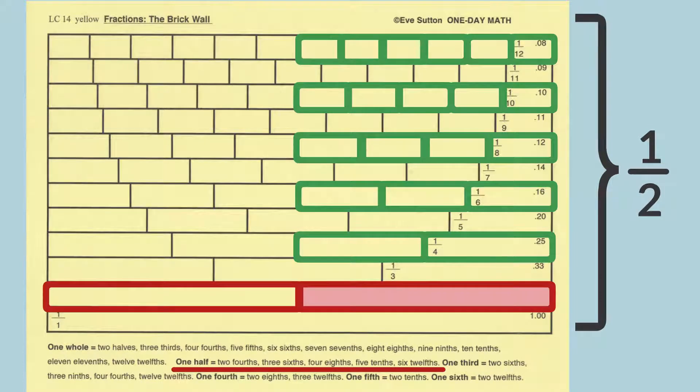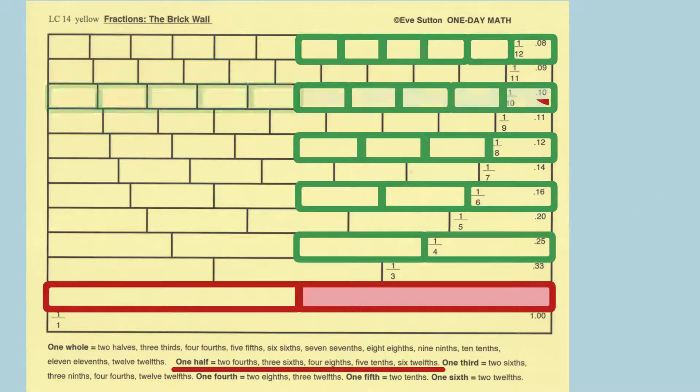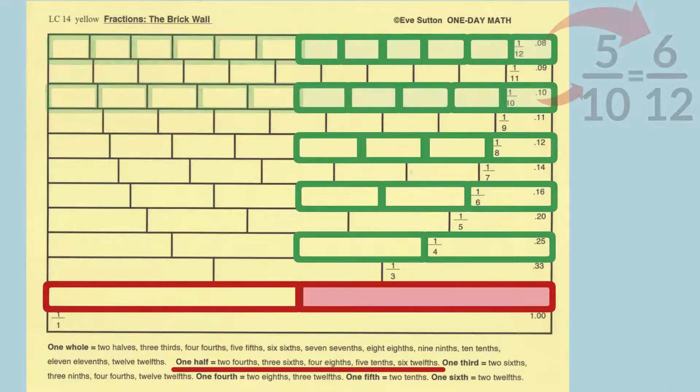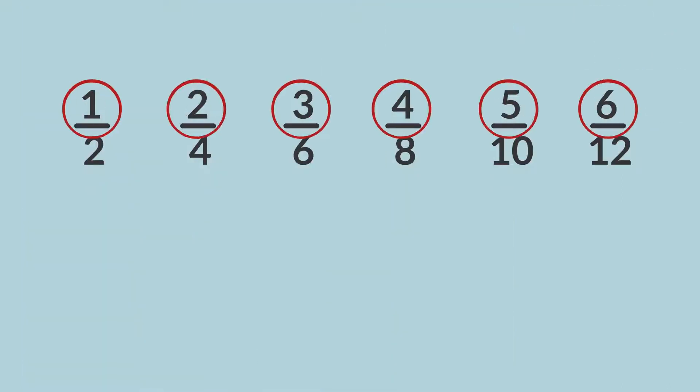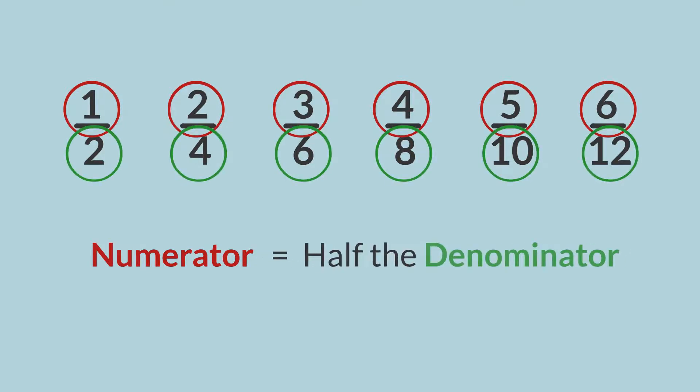So, they are also equal to each other. Two-fourths equals three-sixths. Five-tenths equals six-twelfths. In all these examples, the top number, or numerator, is half the bottom number, or denominator. In all these examples, the top number divided by the bottom number equals 0.5, or 0.50, or 50%.